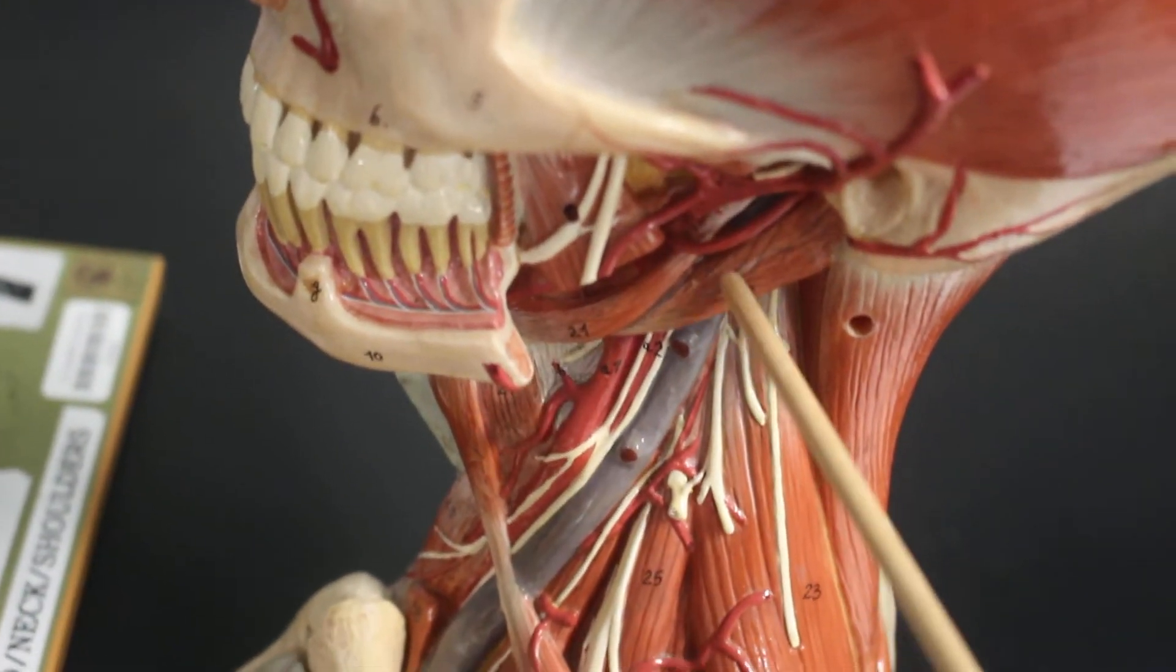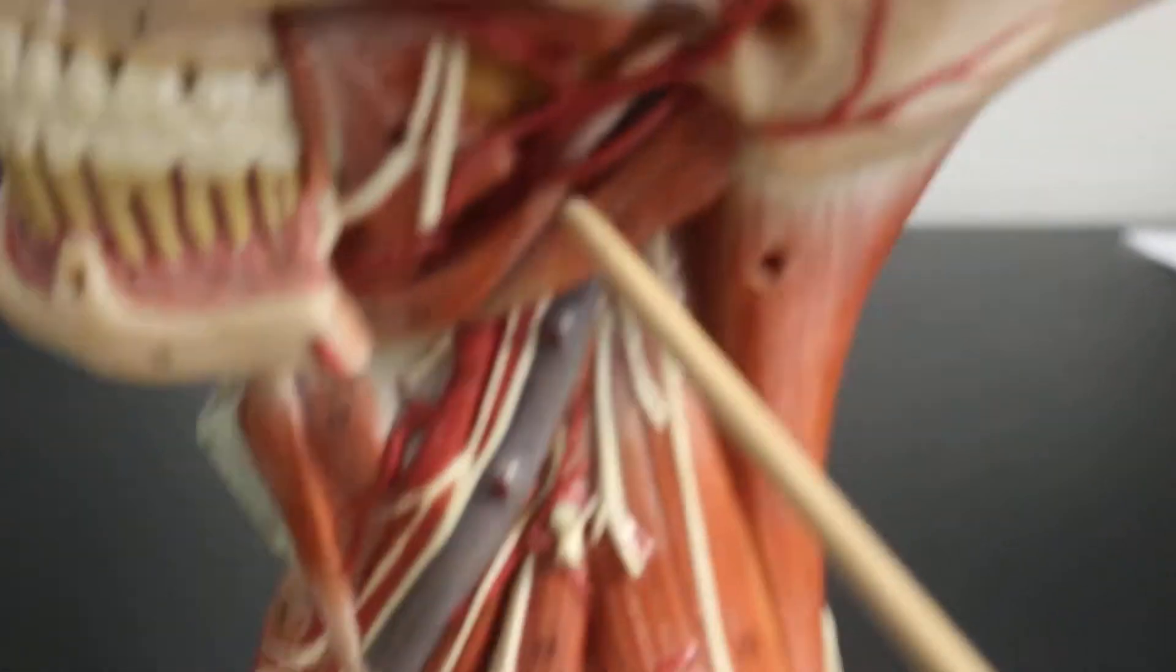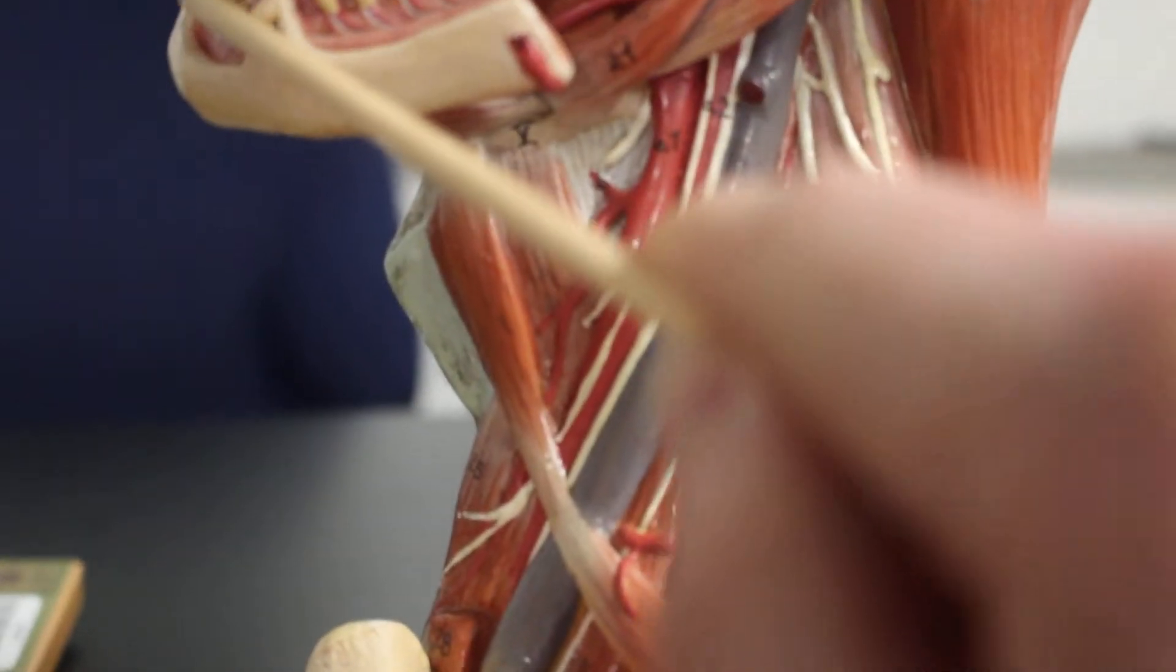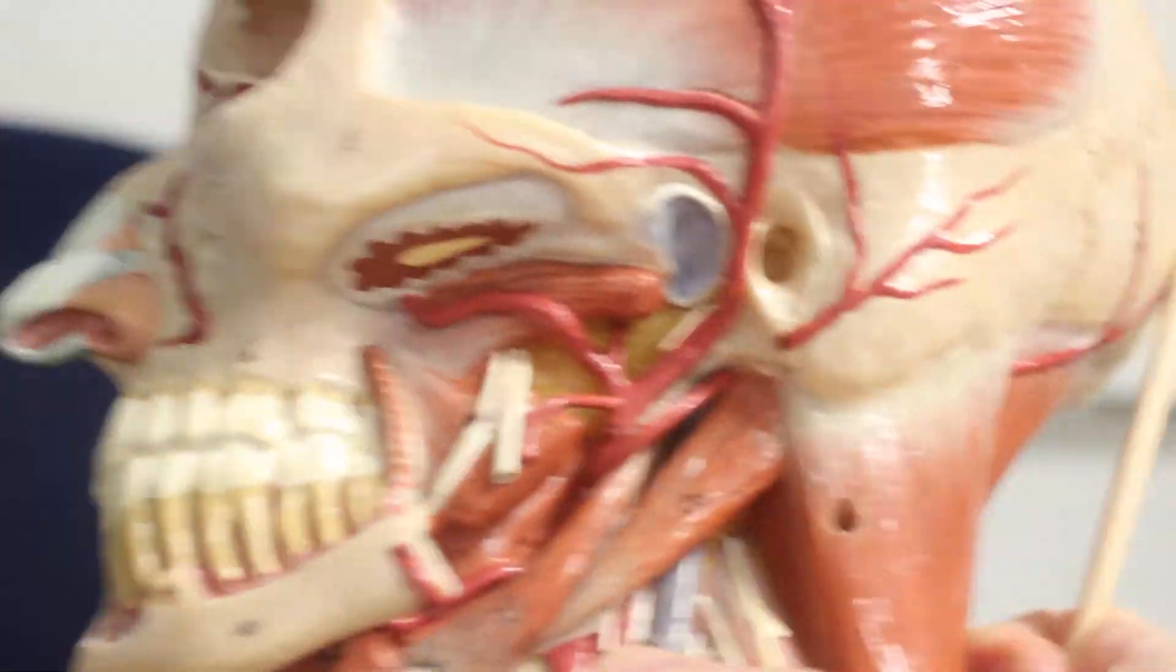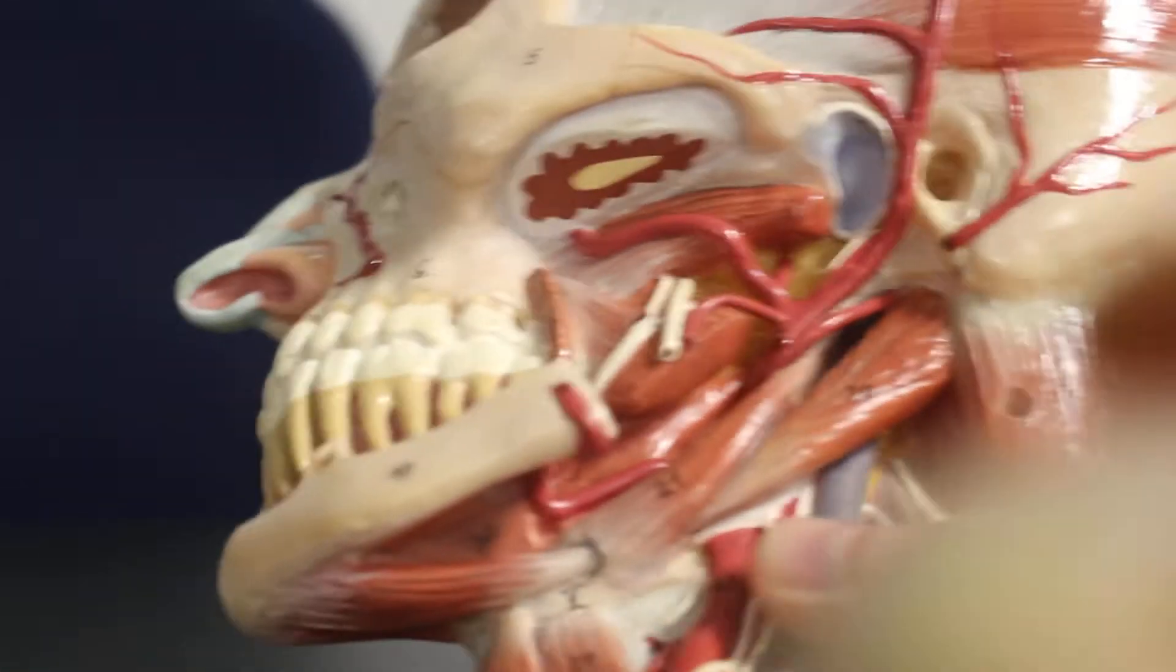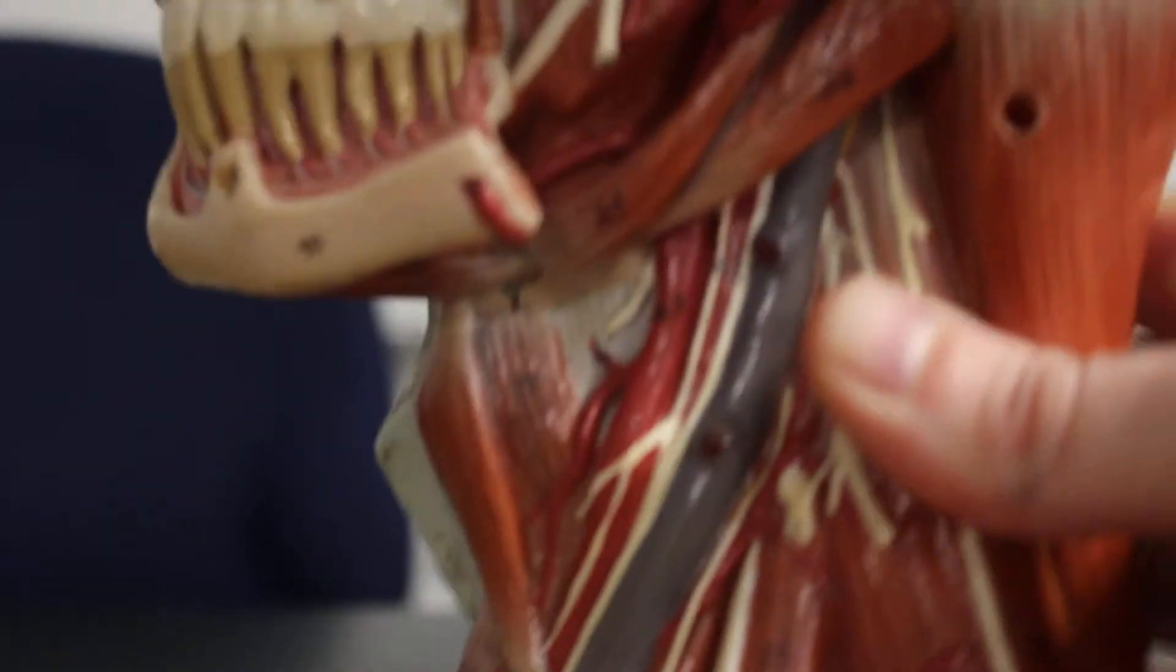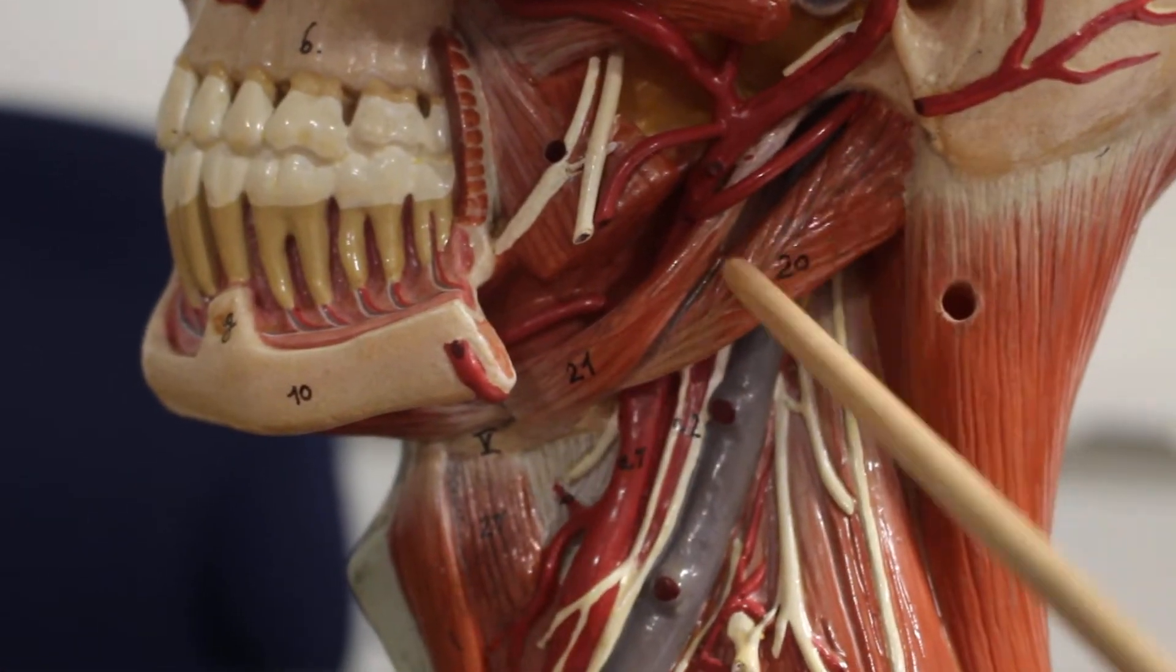Then this muscle here is digastric. Digastric starts here. It has two bellies. It wraps around underneath. So that is also digastric. As you can see there, it's a two-bellied muscle going from under the jaw up to back here. So that is all digastric.